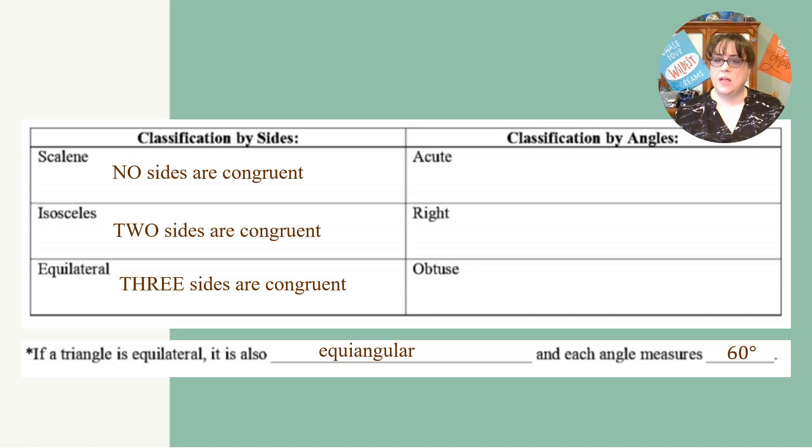We can also classify by its angles. When we classify a triangle by its angles, they can either be acute, right, or obtuse. Most of us are familiar with a right triangle, but you may not have heard of acute or obtuse.